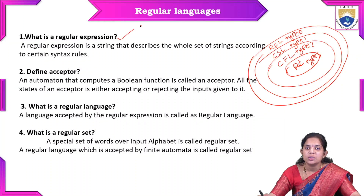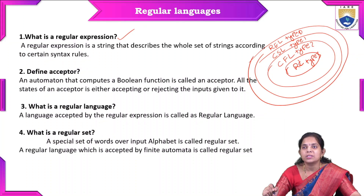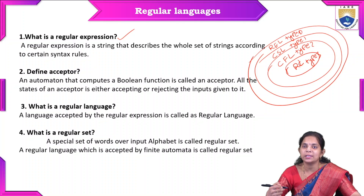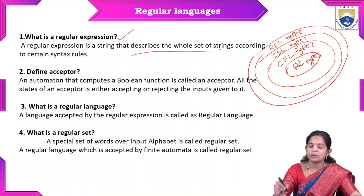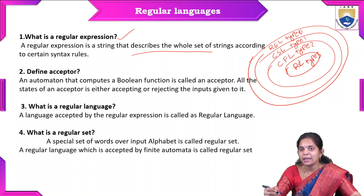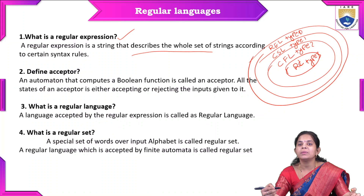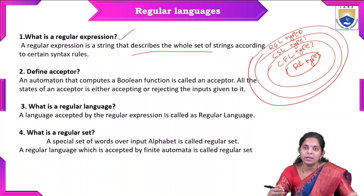The first definition is regular expression. A regular expression is a string that describes a whole set of strings according to certain syntax rules. By seeing the regular expression, we can directly say what the language is and what the finite automata is. With a single-line representation, we can form a transition diagram, a language, and multiple strings from the language.